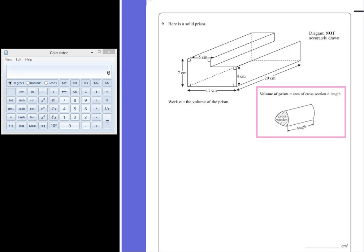Now the front of your exam paper will give you this reminder that the volume of a prism is calculated by finding the area of a cross section, so in this case would be this compound rectangle at the front of the shape multiplied by its length. So we're going to work out the area of this shape at the front and then multiply it by 20.